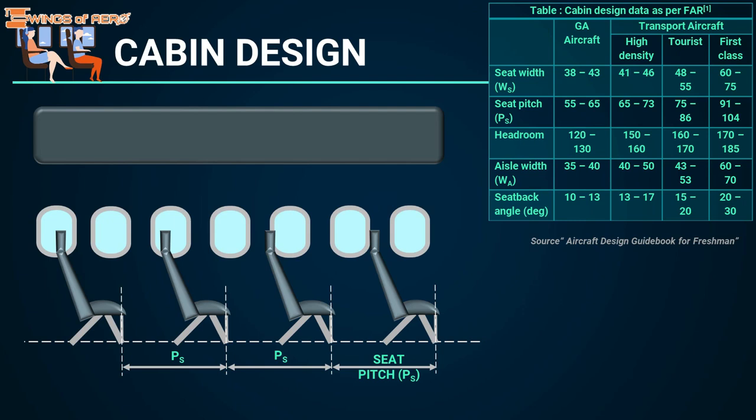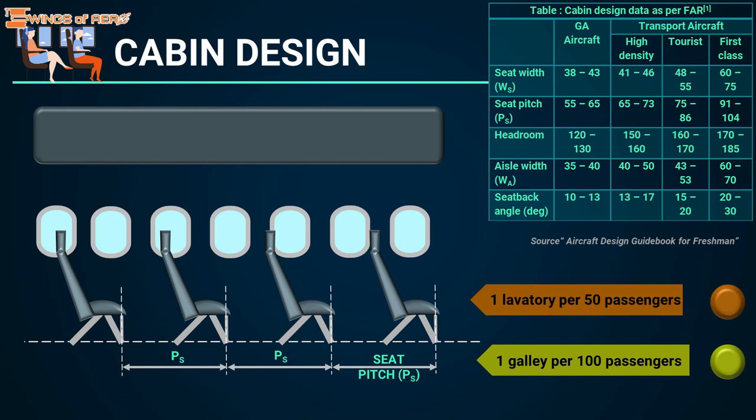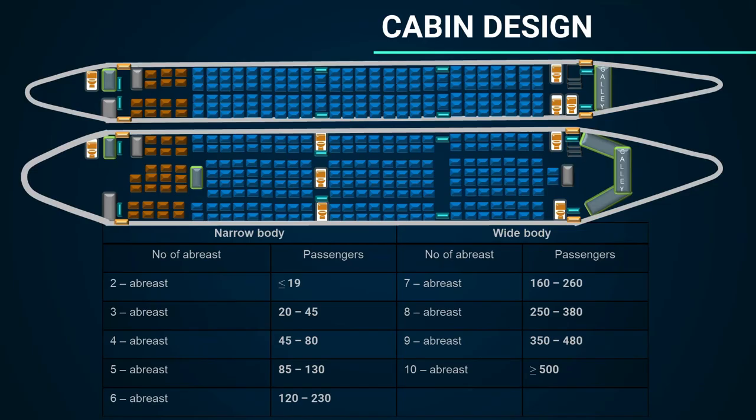Large passenger aircraft should have at least one lavatory per 50 passengers and one galley per 100 passengers. A galley is a place where food is stored during flight. Before proceeding to the design, there is one more important concept to understand: the abreast configuration for narrow and wide body aircraft.